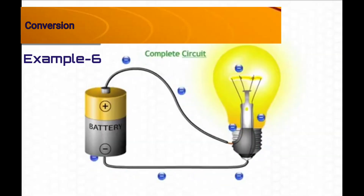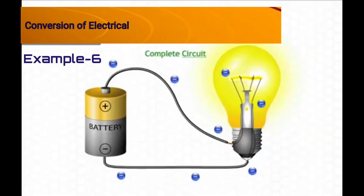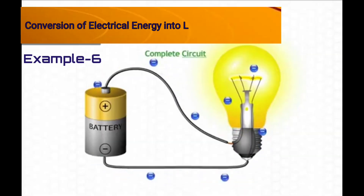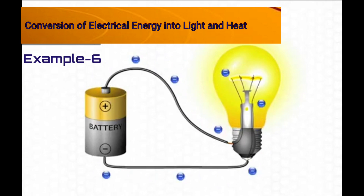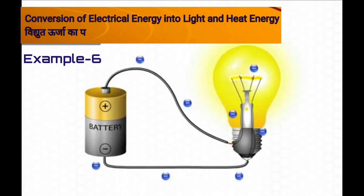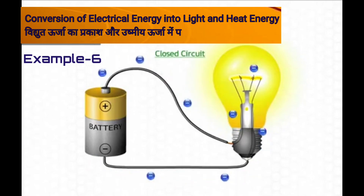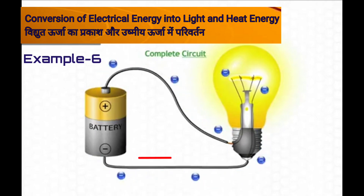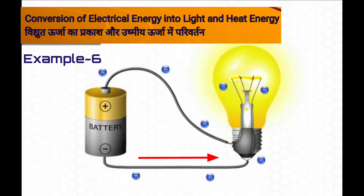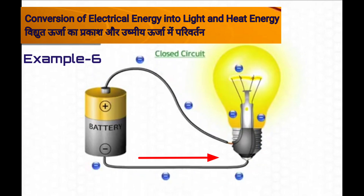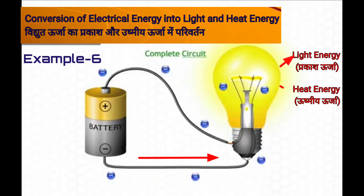Next is conversion of electrical energy into light and heat energy. When electric current passes through an electric bulb, it glows and gives out light and heat energy.